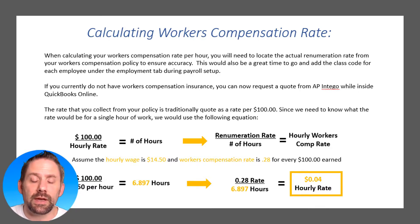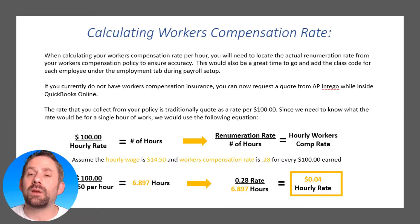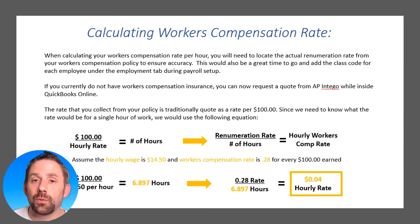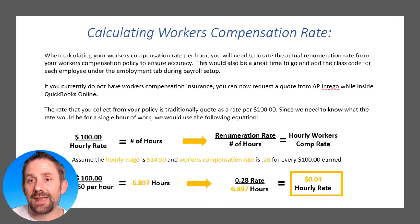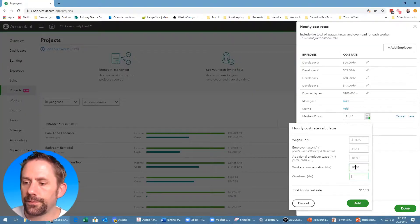If you do not have workers compensation at this time, you can actually request a workers compensation quote directly from QuickBooks Online through AP Intego. For our specific example, we're looking at an administrative person with a rate of 0.28, meaning for every $100 earned, $0.28 is paid to workers compensation. To find the per-hour rate: 100 divided by $14.50 gives us 6.897 — meaning 6.897 hours equals $100 gross wages. We then take 0.28 divided by 6.897, which gives us $0.04 per hour for workers compensation.